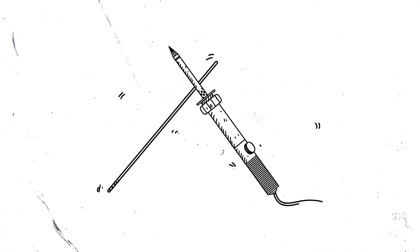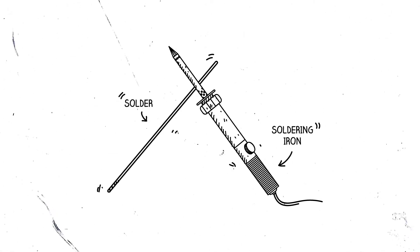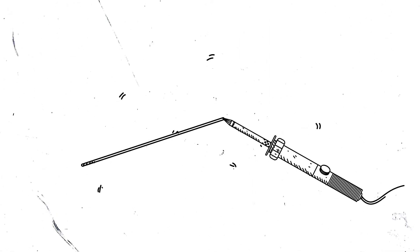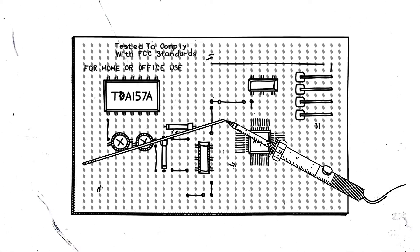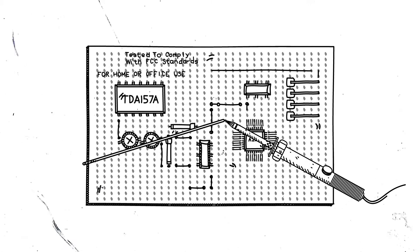All metals conduct electricity. Solder is a mixture of tin and lead. The atoms are held together quite weakly, but solder melts easily and can be used to make electrical connections. You wouldn't make anything structural out of solder — it's too soft. But it conducts electricity very well.